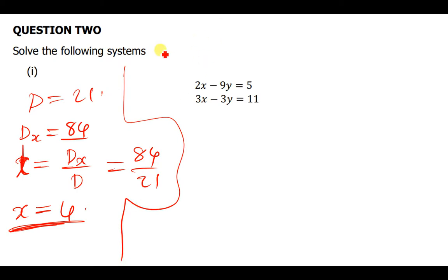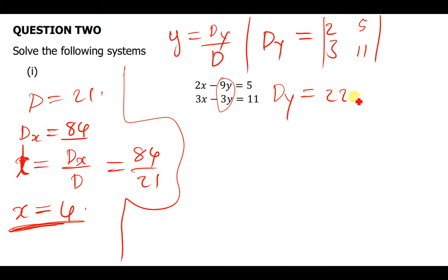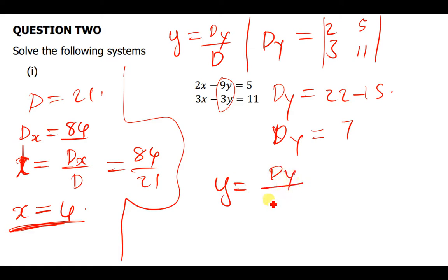Now let us find the value of y. We know that y is found by dy over d. To find dy, we replace the y column with the answers: the first column stays as 2 and 3, and the second column is replaced by 5 and 11. The determinant: 2 times 11 is 22, minus 3 times 5 which is 15. So dy equals 22 minus 15, which is 7.